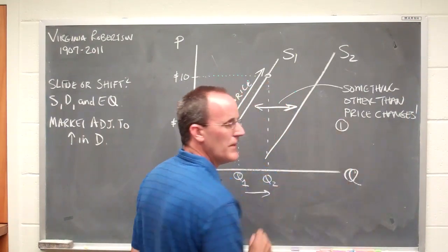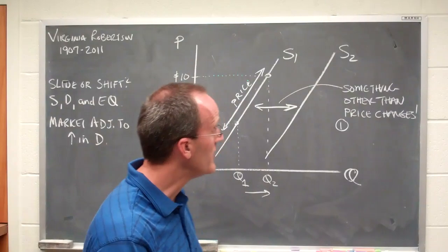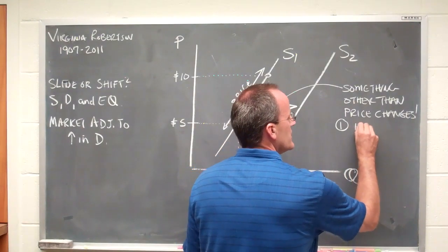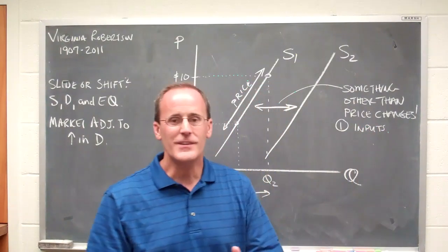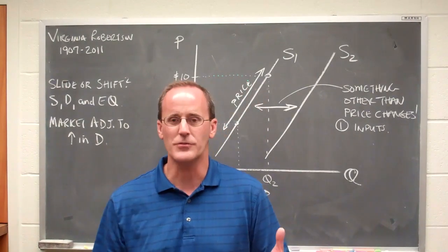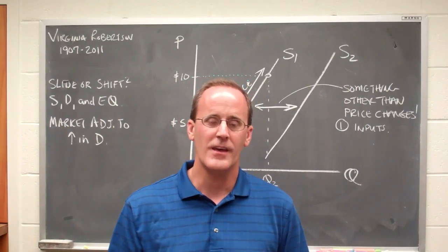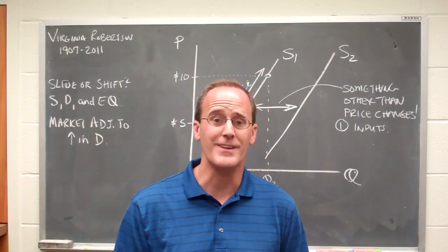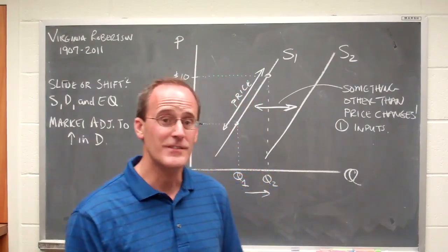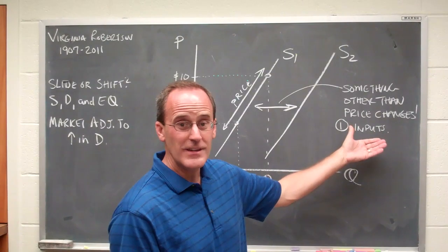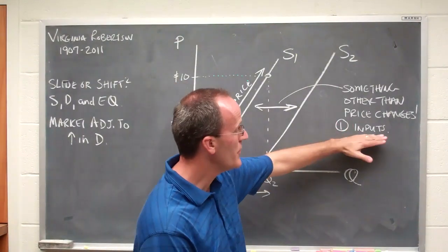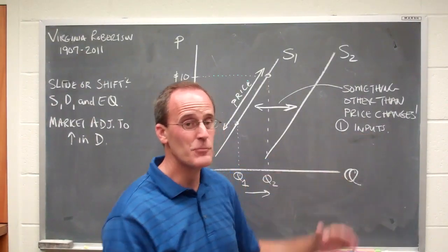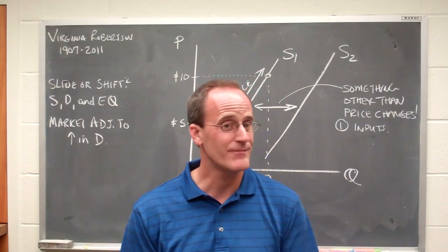So let's go through a list of things that we might consider as having an effect upon the location of the supply curve. The first would be inputs. Every business needs inputs or resources to be able to produce the final product that it sells. For instance, you need laborers to help assemble products. You might need raw materials. You might need computers. You might need land. You might need a factory. You need all of these things. And so inputs are what businesses need to make the final product. So let's keep it simple. Suppose that one of the inputs is labor. And suppose that labor costs go up. Would that be good or bad for your business? Try to answer that question right now.